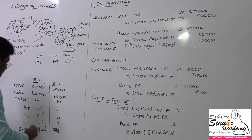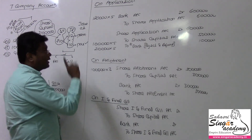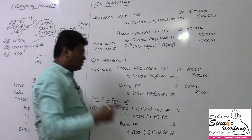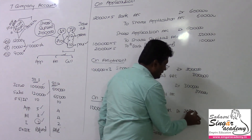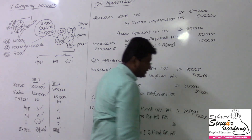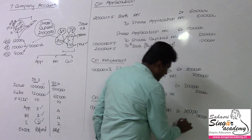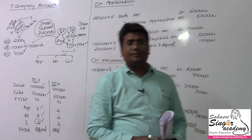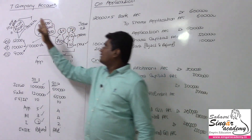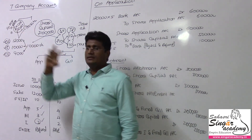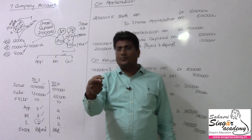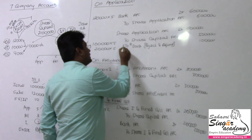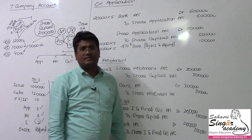Now we are going to deal with the first and final call, that is 2 rupees per share on 1 lakh shares. So 1 lakh will be due for the first and final call. The next entry will be the collection entry — bank account debit to share first and final call account. The value will be the same. The key point to note here is: in the case of oversubscription, the excess is reject and refund.